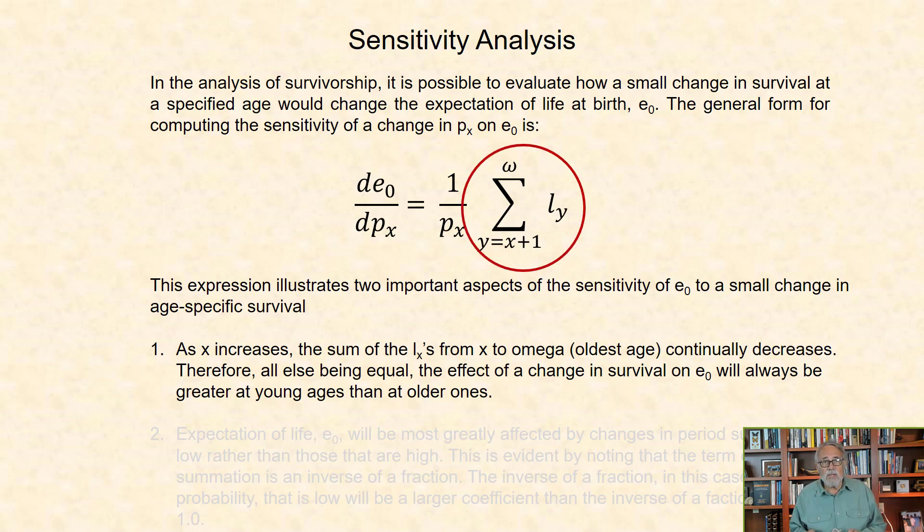the sum of the LXs from X to omega, that is, the oldest age, continually decreases. Therefore, all else being equal, the effect of a change in survival on E0 will usually, although not always, be greater at younger ages than at older ages.